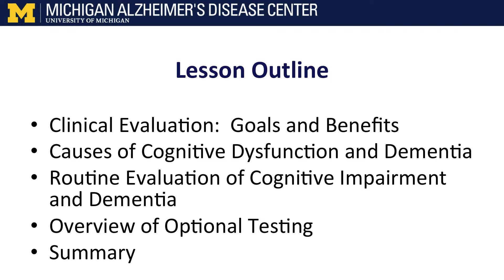Then we will talk about the causes of cognitive dysfunction and dementia in a general sense. I'll be more specific discussing the routine evaluation of cognitive impairment and dementia. There will be a brief overview of optional testing and then a summary and references.